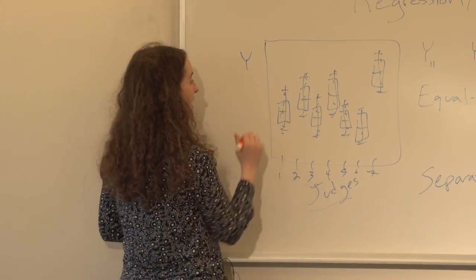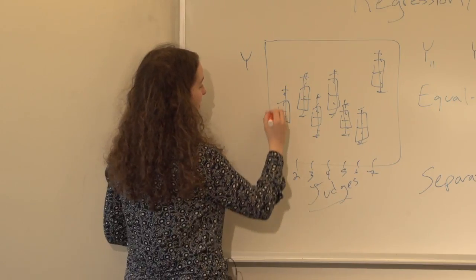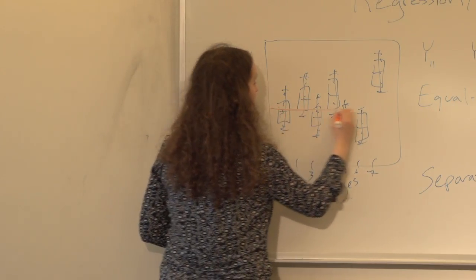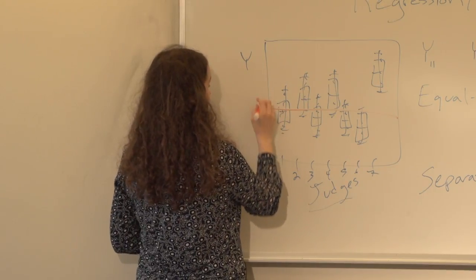For the equal means model, y bar is just the mean of all the values of y without taking into account which judge you have. This is just going to be some value that's the same all the way across, this y bar.